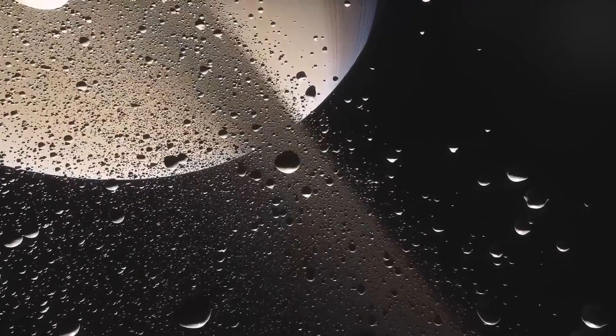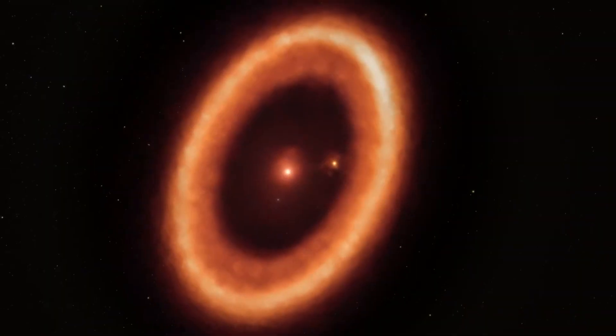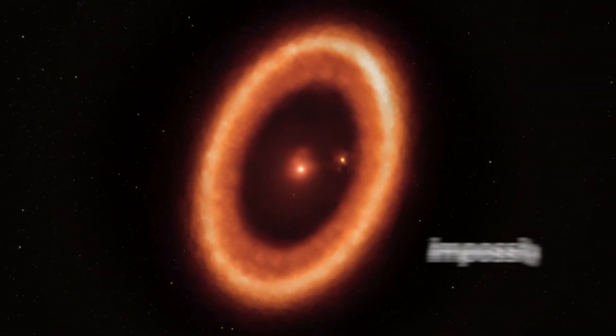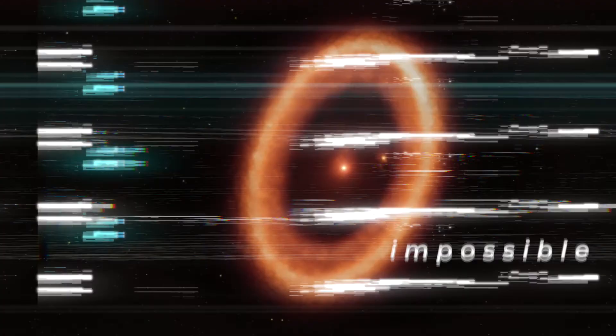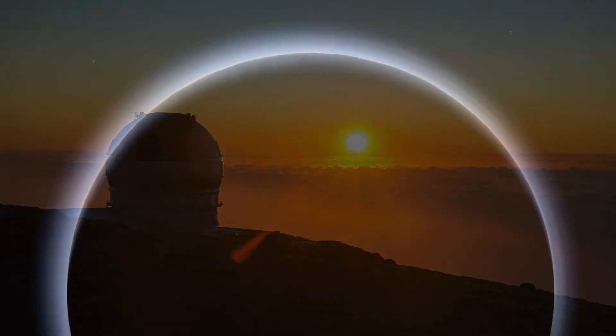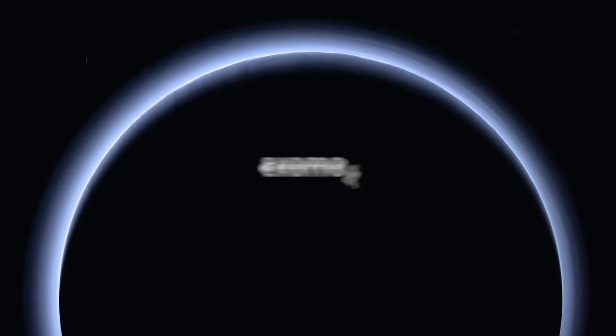Whatever the case may be, if there are any moons in orbit around the planets of system PDS 70, it will be impossible to detect them with our current technology. It will likely be several more years before the first announcement of the discovery of an exomoon.